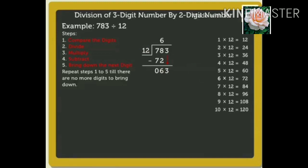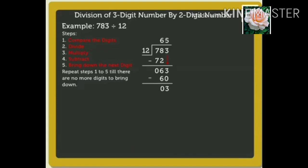We use the table of 12 such that the product is equal to or less than and nearest to 63. The nearest product is 60. So, we write 5 in the quotient above the 3. As we know, 12 times 5 is equal to 60. Write the number 60 under 63. Next, subtract 60 from 63, which equals 3. As there are no more digits to bring down, we have finished our division. Thus, we get the quotient as 65 and remainder as 3.